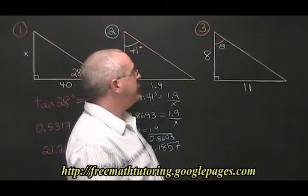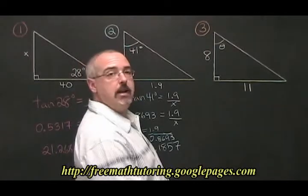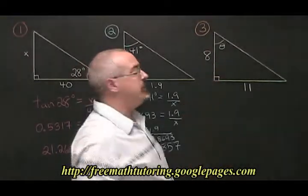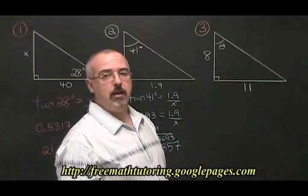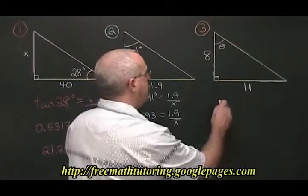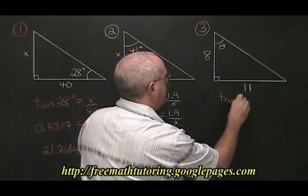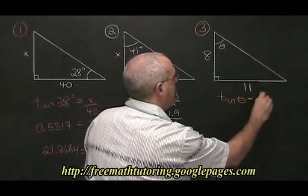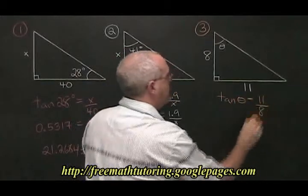In example three, we are looking for this angle theta, which has an adjacent side of 8 and an opposite side of 11. Our TOA formula looks like this. TAN of theta equals 11, the opposite, over 8, the adjacent.